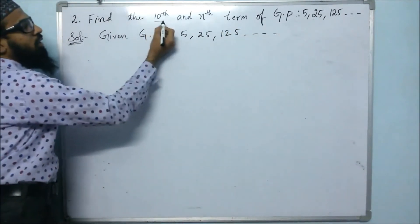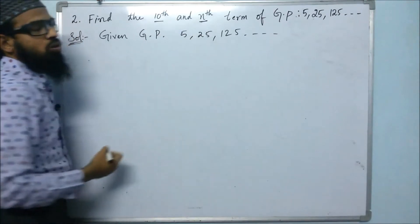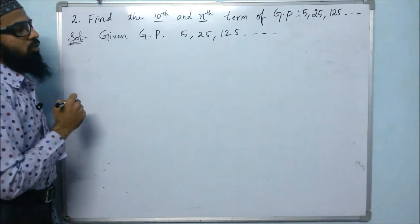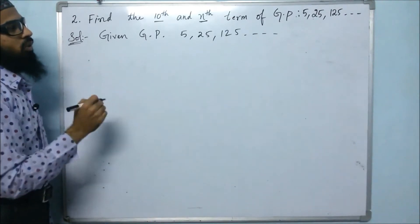We have to find the 10th term and nth term. We know that for finding the nth term, the formula is an = a·r^(n-1).